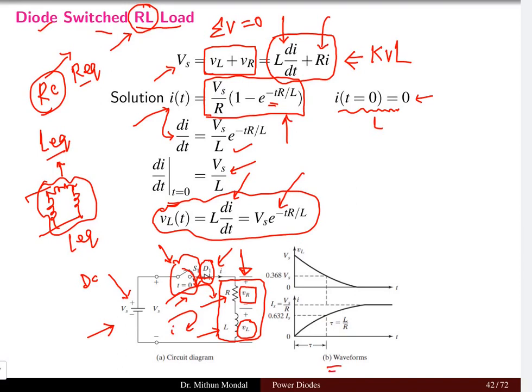If we plot the waveform on the x-axis we have the time and on the y-axis we have the inductor voltage. The maximum voltage of the inductor we can see at time t equal to zero is Vs and this is exponentially decaying with the time constant tau given by L by R.